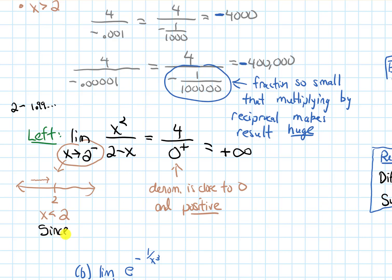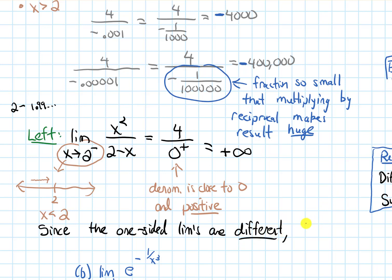Since the one-sided limits are different, the limit as x approaches two of x squared over two minus x does not exist — DNE.